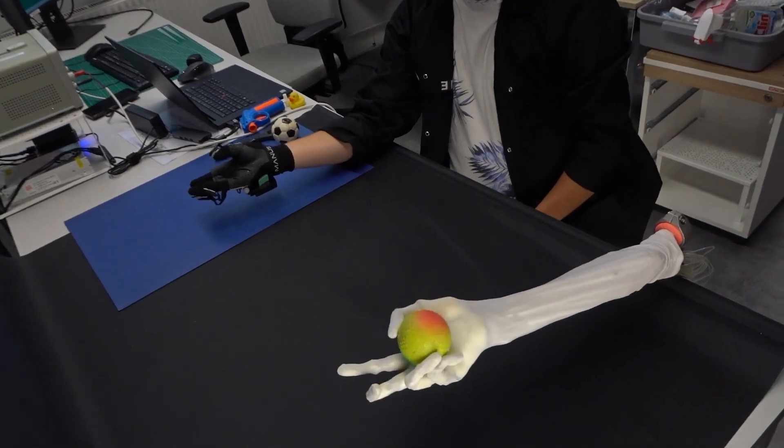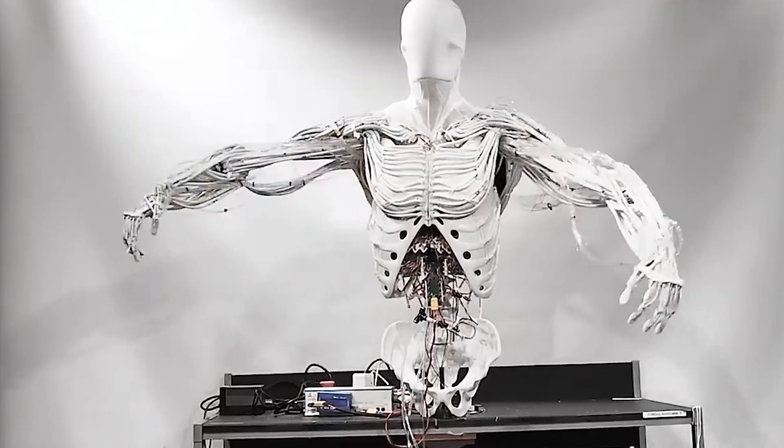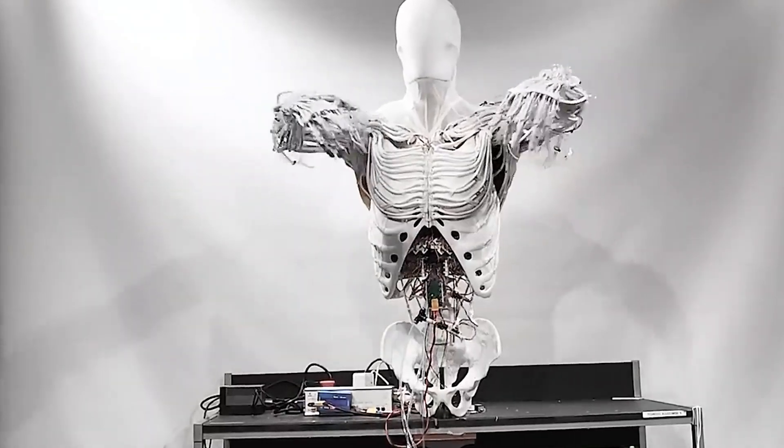The robotic hand, for example, featured a rotating thumb and could catch a ball with precision, while the torso demonstrated realistic shoulder and spinal movements.